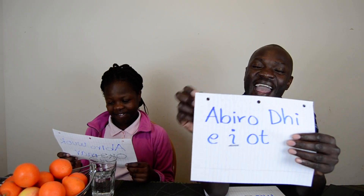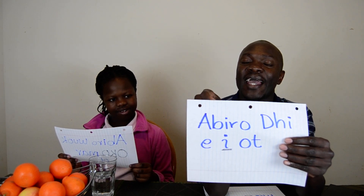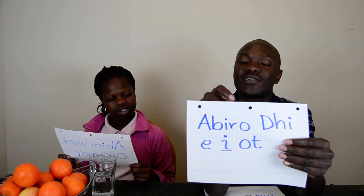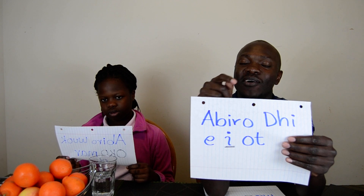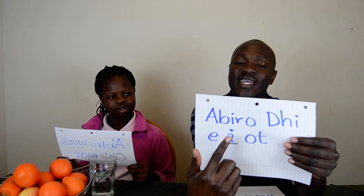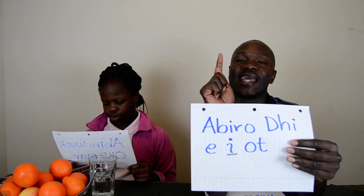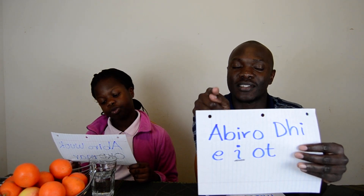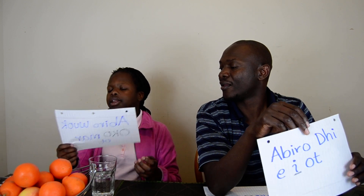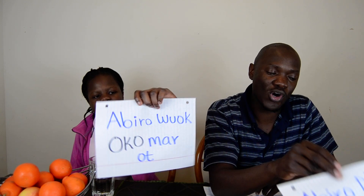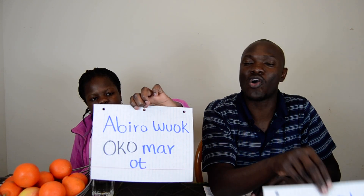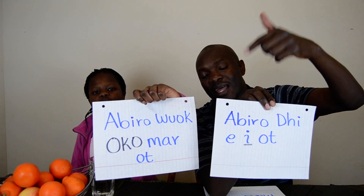Abiro di ee ot. I will go to the inside of the house — into the house. Nikki: Abiro walk oko mar ot. I ee means inside, and the opposite is oko, meaning outside. So in is i ee, out is oko.